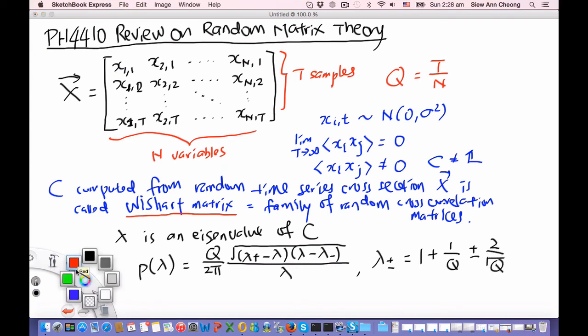And this particular eigenvalue distribution is called the Pastor-Marchenko distribution. And this is the most important result that emerged from the random matrix theory of Wishart matrices or random correlation matrices.